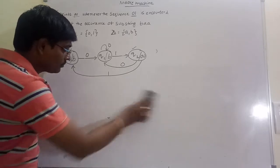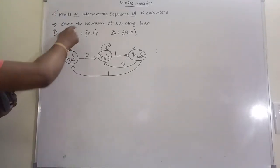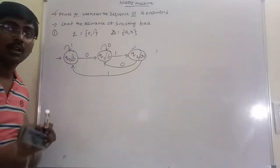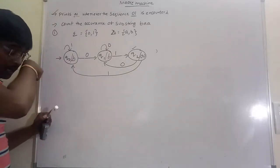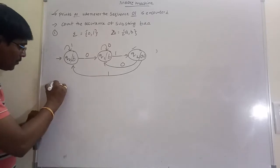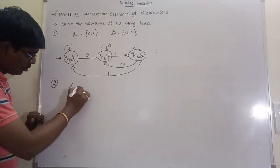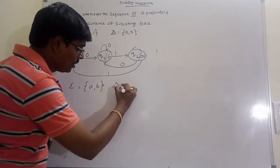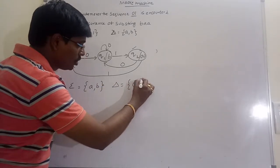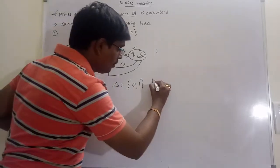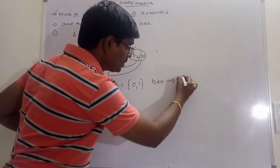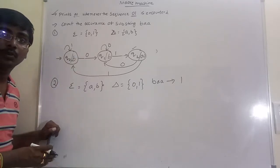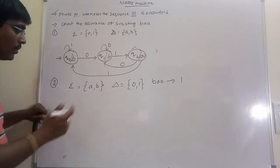Next: count the occurrences of the substring BAA. For the second question, assume sigma — the input alphabet — is A and B; delta output symbols are 0 and 1. Whenever BAA occurs, it produces output 1. In all remaining cases, it produces output 0. Now first construct the DFA with states Q0, Q1, Q2, Q3.